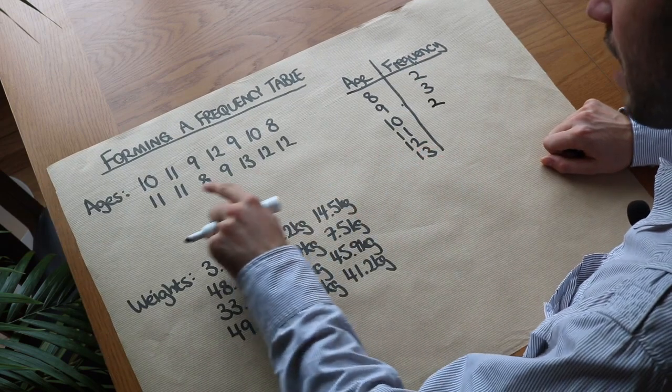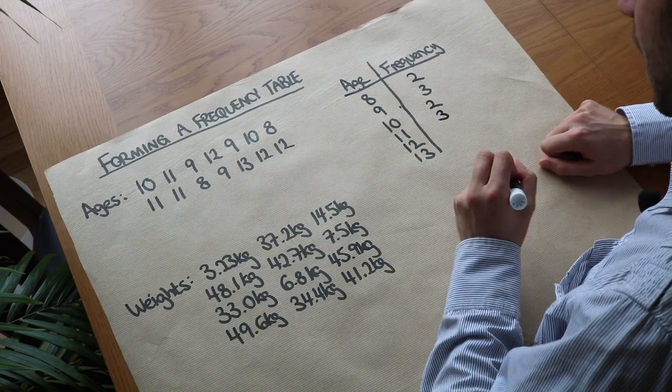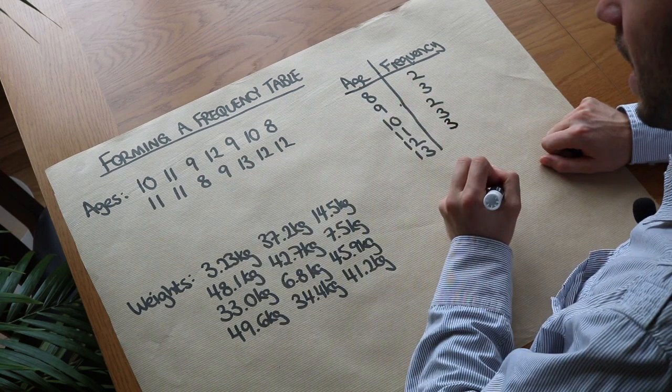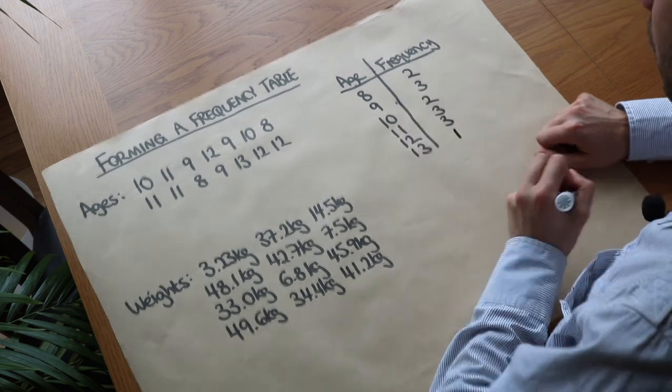How many times does an age of eleven occur? One, two, three. How many times does an age of twelve occur? One, two, three again. And how many times does an age of thirteen occur? Just the once.